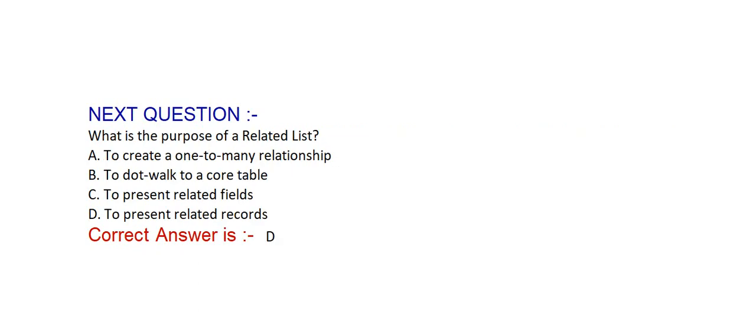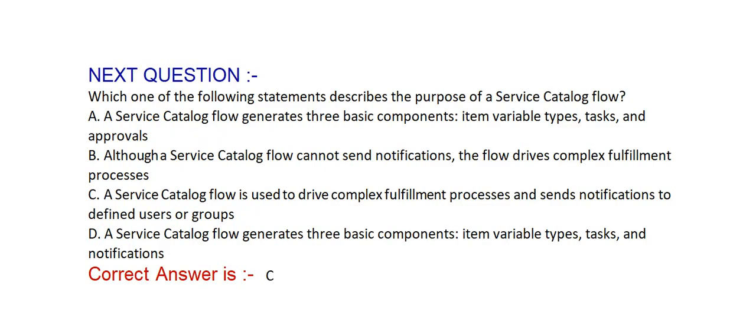Next question: What is the purpose of a related list? Option A: to create a one-to-many relationship. Option B: to dot walk to a code table. Option C: to present related fields. Option D: to present related records. Correct answer is Option D, to present related records.